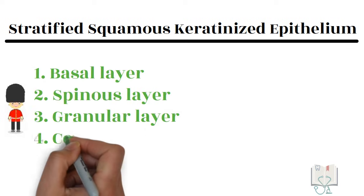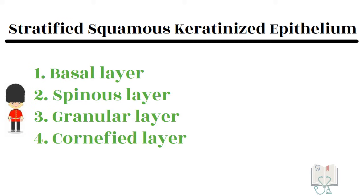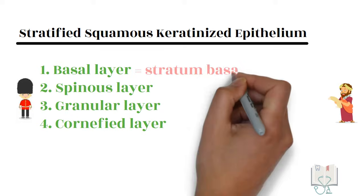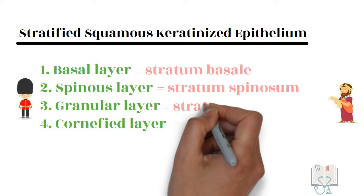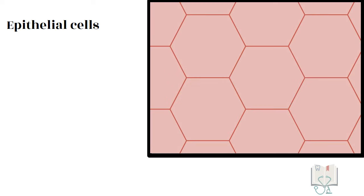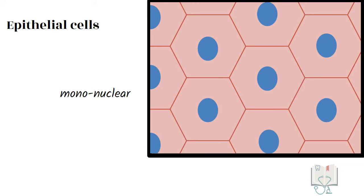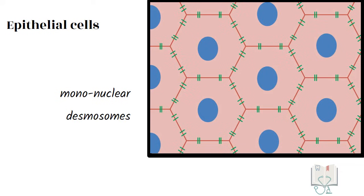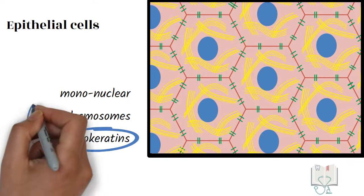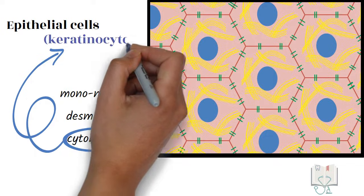Stratified squamous keratinized epithelium has four layers: basal layer, spinous layer, granular layer, and cornified layer — or as they are more commonly known by their Latin names: stratum basale, stratum spinosum, stratum granulosum, and stratum corneum. Structurally, epithelial cells are mononuclear, have intercellular bridges called desmosomes, and have characteristic fibrous proteins called cytokeratins in the cytoplasm. It is because of these cytokeratins that epithelial cells are called keratinocytes.